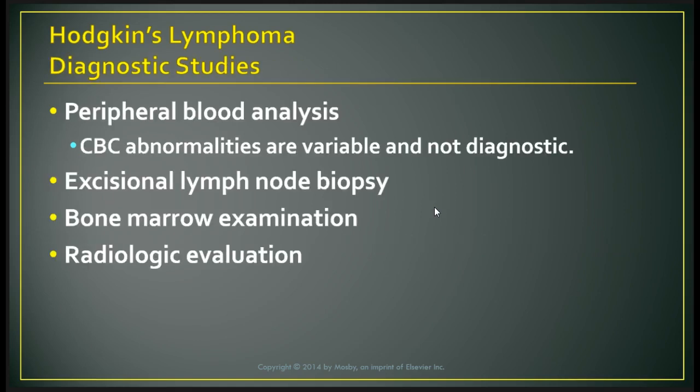Leukopenia and thrombocytopenia can develop, usually as a consequence of treatment, advanced disease, or superimposed hypersplenism. Radiologic evaluation defines sites of involvement and determines clinical stage. PET scan with or without CT is used to stage and assess response to therapy, and to differentiate residual tumor from fibrotic masses after treatment.